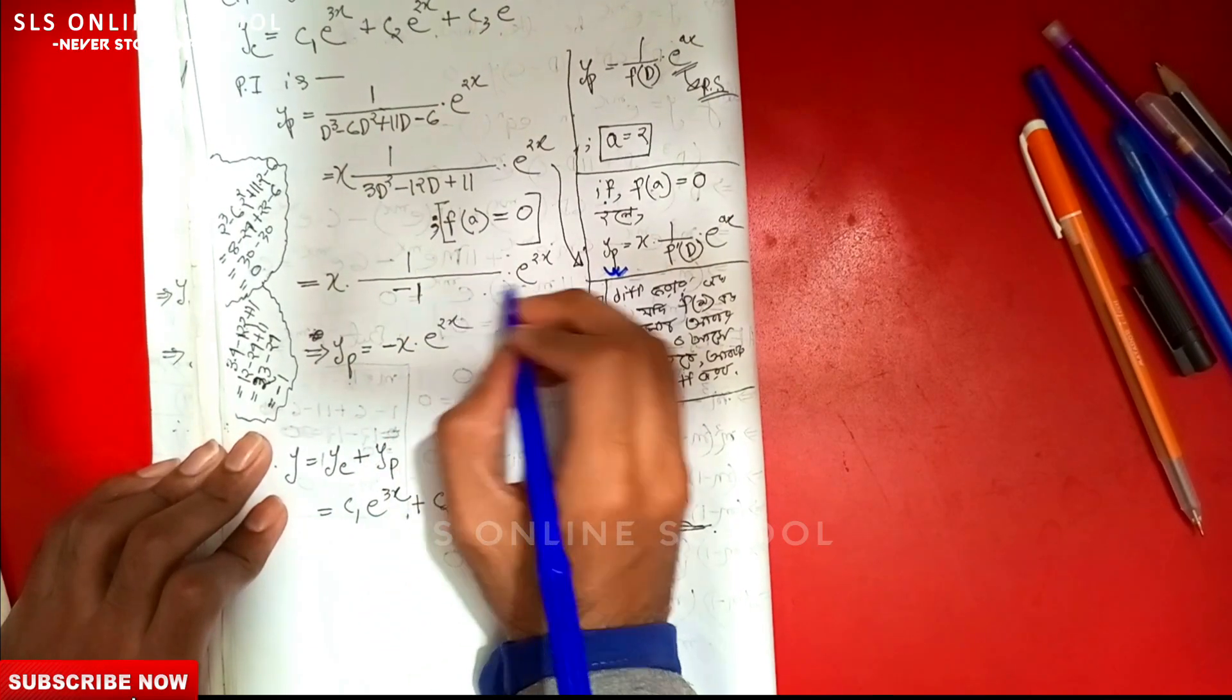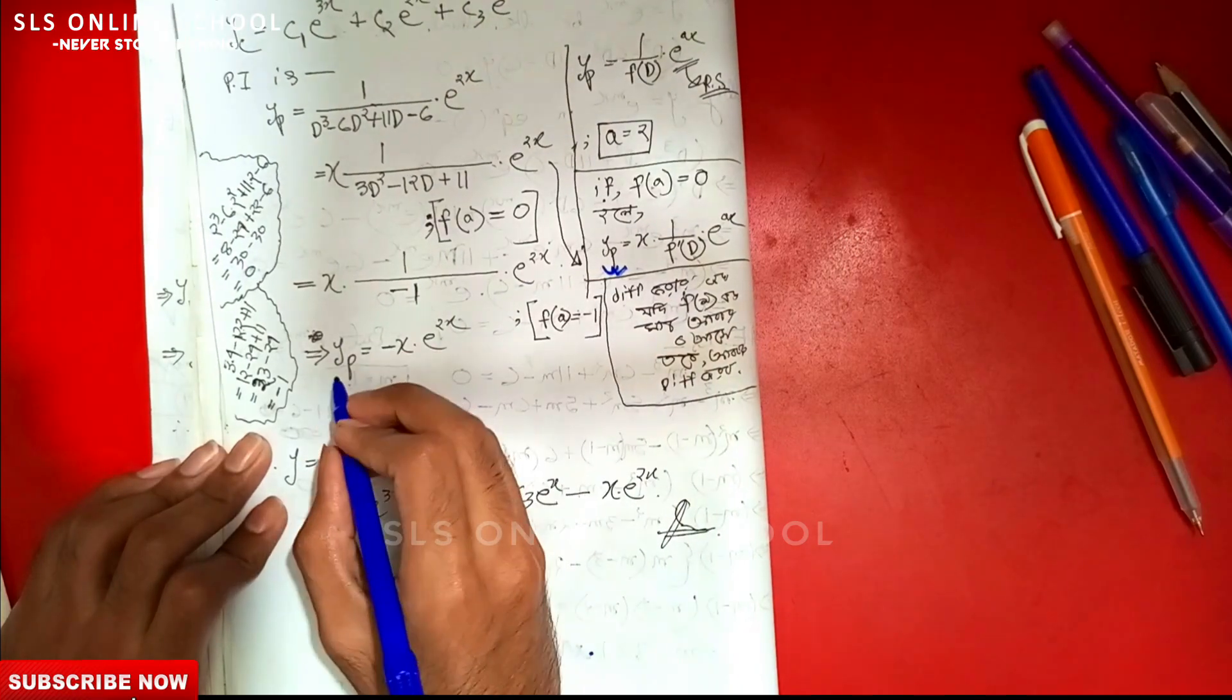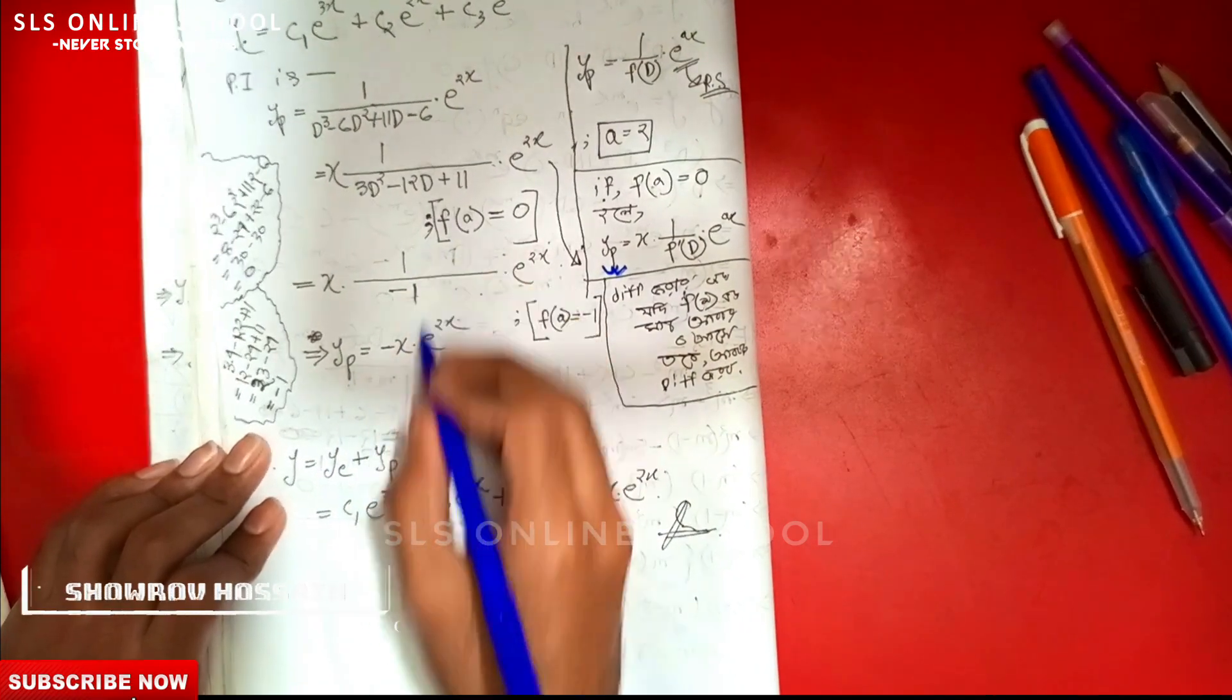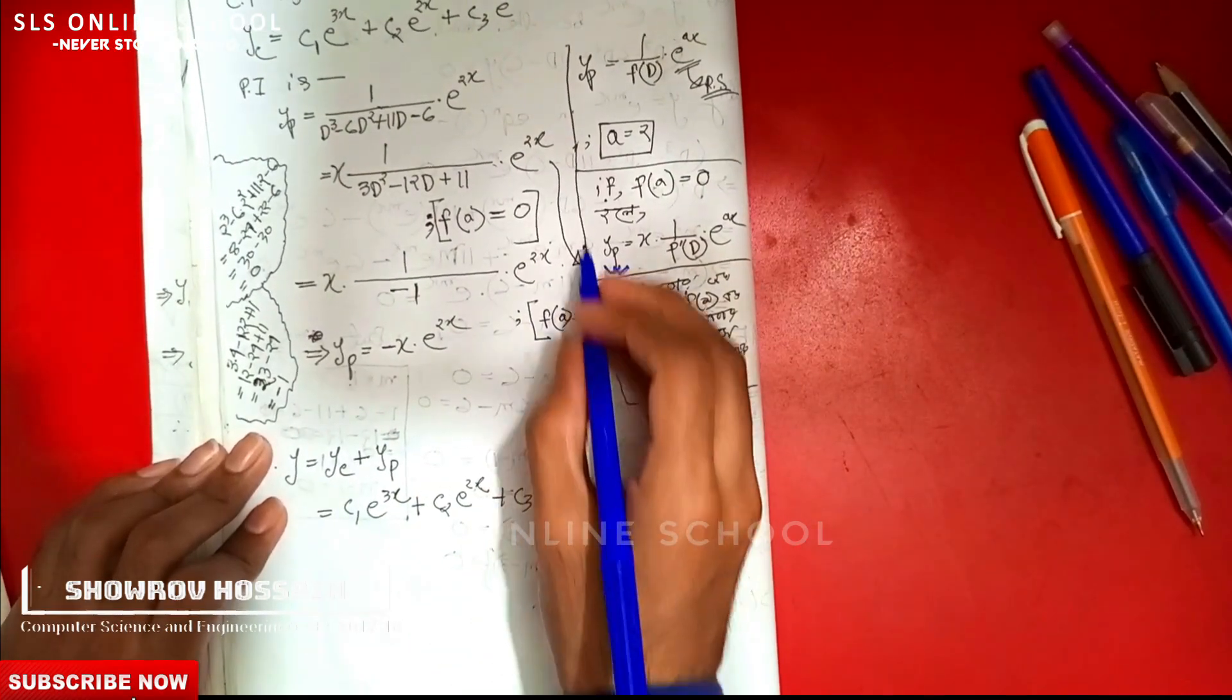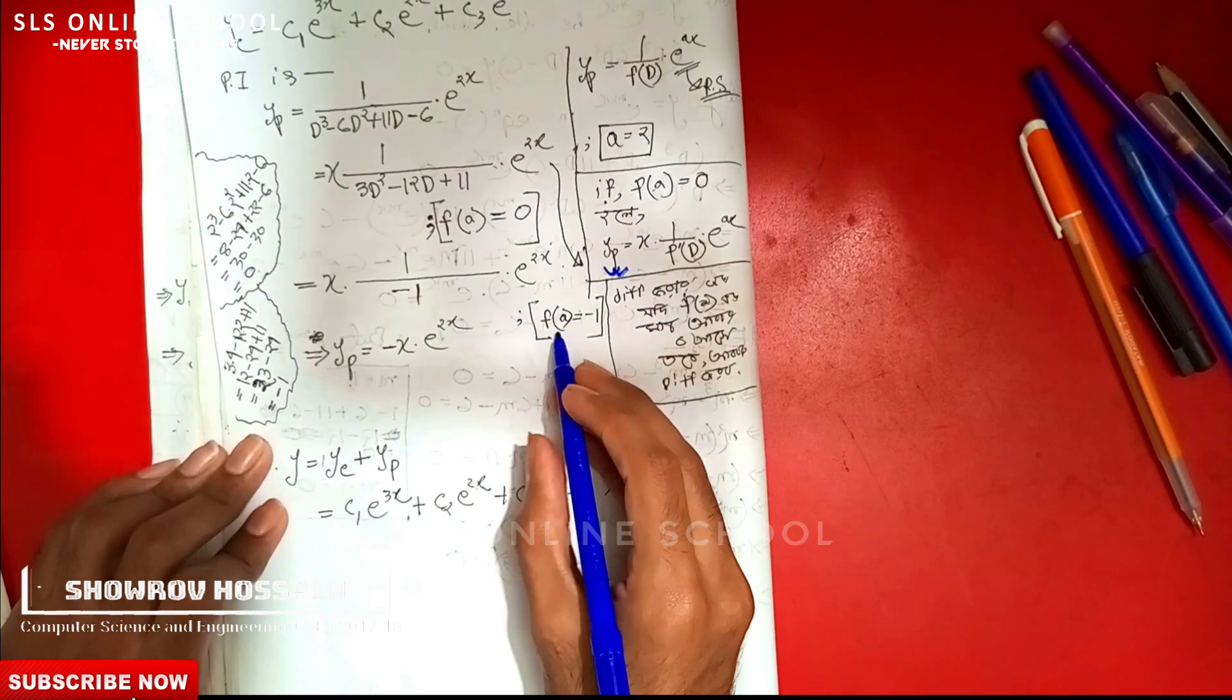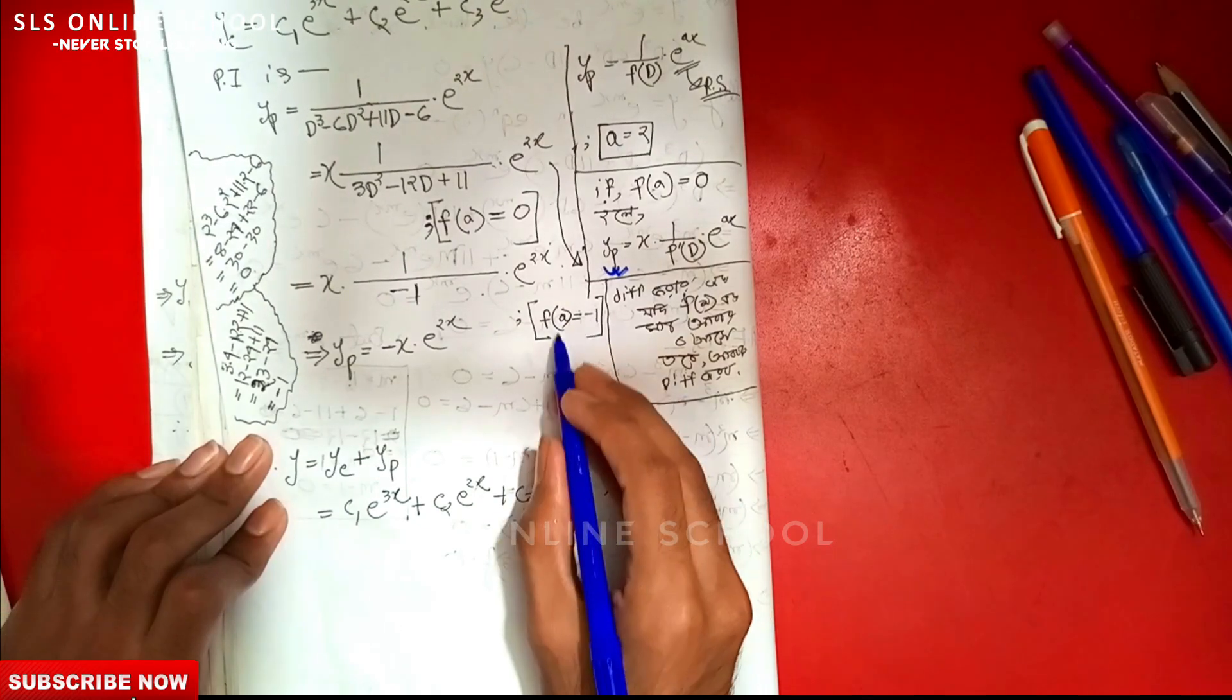So 1/(-1) · e^(2x), that is, yp equals minus x · e^(2x). As usual, the function of a is not equal to zero.